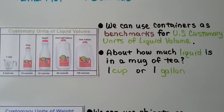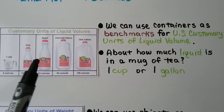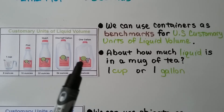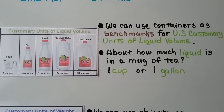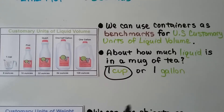We can use containers as benchmarks for U.S. customary units of liquid volume. We have one cup, a pint, a quart, one half gallon, and one gallon. About how much liquid is in a mug of tea — do you think it would be one cup or one gallon? If you said one cup, you're right. One gallon would be a lot of tea, and it wouldn't fit in a mug.